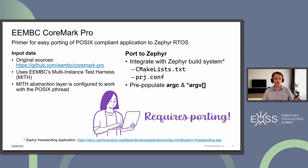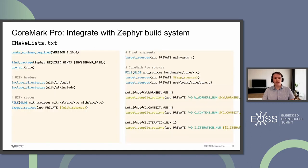Even though CoreMark Pro doesn't compile out of the box as an application on top of Zephyr because it was never prepared like that, if we go and look at the documentation which explains how to integrate a freestanding application with Zephyr, we can actually easily do that. What we need to do is introduce a couple of additional files to instruct Zephyr's CMake build system what we actually need to build and how to do that, and then add some configuration options to accommodate things used in that project.